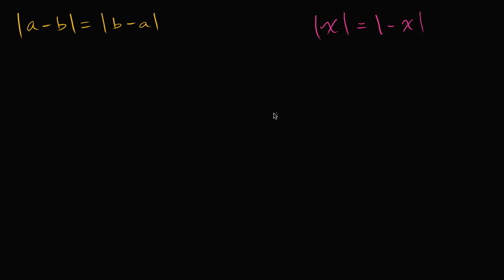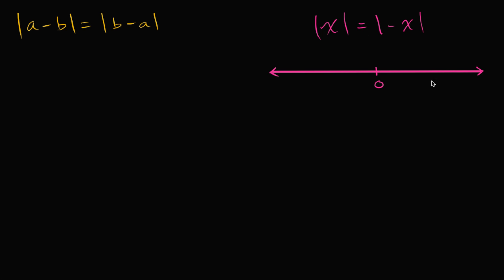And to feel good about this, we could draw a number line. This is zero. There's one circumstance in which X is positive. Obviously if X was zero, then these are both going to be equal to zero and it would be true. But in the world where X is positive, then negative X would be the same distance to the left of zero. The absolute value of X would be this distance, and the absolute value of negative X would be that same distance but just to the left. So these two things would be equivalent.